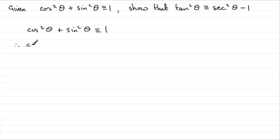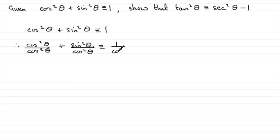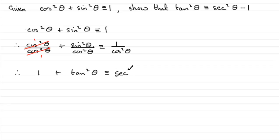And what's that going to give us? Well, it will give us cos²θ over cos²θ, then plus, for this term, sin²θ over cos²θ, and that will be identical to 1 over cos²θ. Now, cos²θ over cos²θ cancels — goes once. So therefore what we've got here is 1. Sin²θ over cos²θ is tan²θ, and 1 over cos²θ is sec²θ.